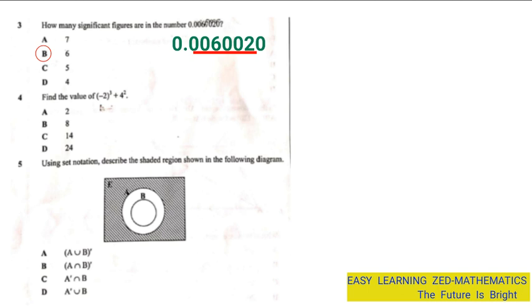Let's go to question number 4, which is: find the value of negative 2 cubed plus 4 squared. So I'm going to find the value of negative 2 to the power of 3 plus 4 to the power of 2. I'm going to write this expression: (-2)³ + 4².